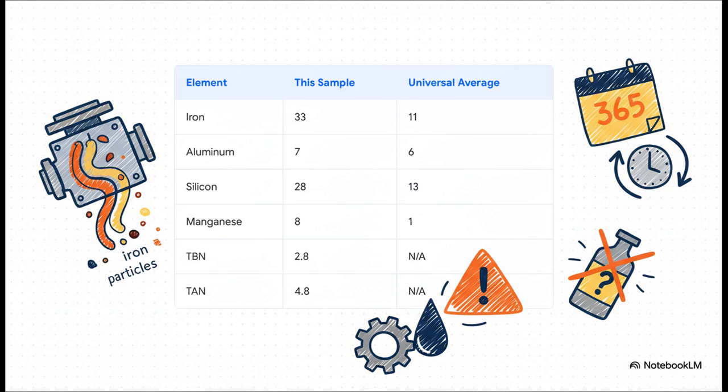So here's our evidence board, the whole shebang from the lab. We've already talked about that shocking iron number, but take a closer look. Aluminum is a little high. Silicon is more than double the average. And manganese - wow - it's an incredible eight times higher than normal. And then you've got these two down here: TBN and TAN. They tell a completely different but just as important part of the story. We'll get to them, for sure.